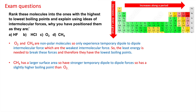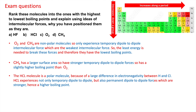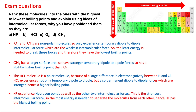HCl is a polar molecule because of the large difference in electronegativity between hydrogen and chlorine. HCl experiences not only the temporary dipole-to-dipole but also the permanent dipole-to-dipole forces, which are stronger - hence a higher boiling point. Finally, HF experiences hydrogen bonds as well as the other two intermolecular forces. Hydrogen bonds are the strongest intermolecular force, so the most energy is needed to separate the HF molecules from each other, hence HF has the highest boiling point. Make sure you understand the intermolecular forces, their types, how they form, and which molecules experience all three, two, or just one.